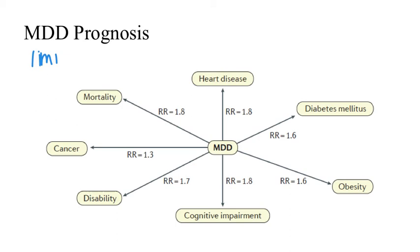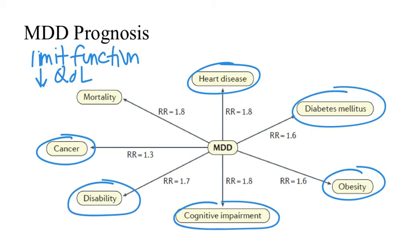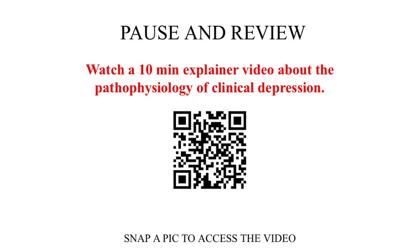Major depressive disorder can significantly limit psychosocial functioning and diminishes quality of life. It also increases the risk of several other disease states, such as heart disease, diabetes, obesity, cognitive impairment, cancer, and other disabilities. However, evidence-based guidelines for the treatment of depression and effective therapeutics do exist, meaning there should be a way to effectively treat patients with MDD and reduce the symptoms of this debilitating disease state.